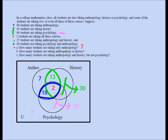Part B: how many students are taking anthropology or history? Anthropology or history means the union of the anthropology and history circles — everything in both circles added together. The two unknown parts in history sum to 30, and the two unknown parts in psychology-only sum to 20. Adding: 30 plus 2 plus 18 plus 7 plus 13 equals 70. So the answer is 70. Anthropology or history means every region in the anthropology circle and every region in the history circle combined.